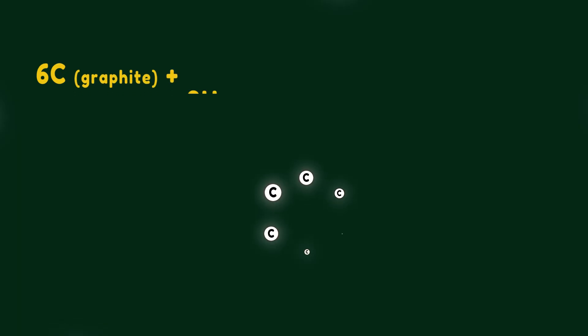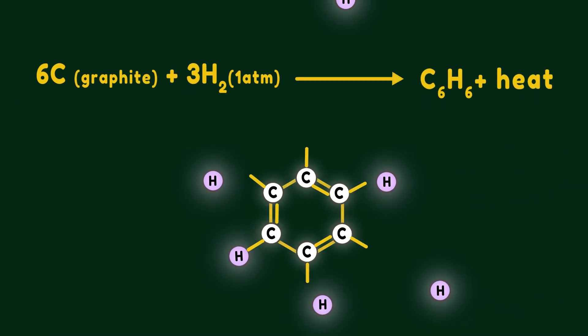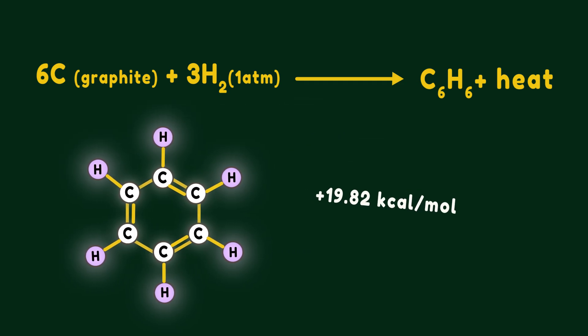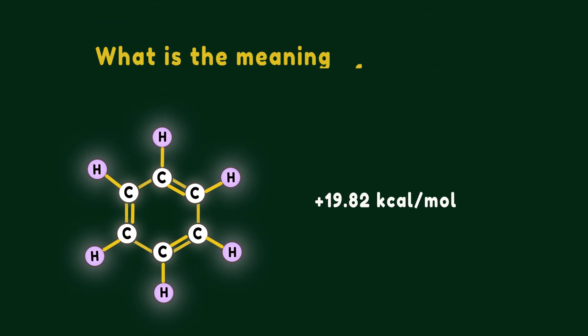We know that benzene consists of 6 carbon and 6 hydrogen atoms. According to the references, a simple calculation indicates that the heat of formation of benzene from its elements in standard condition is plus 19.82 kilocalories per mole. What is the meaning of this number?